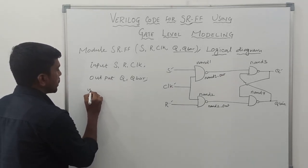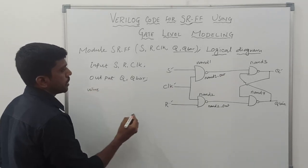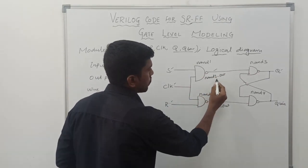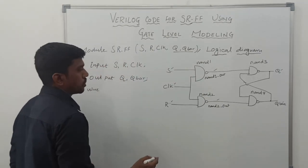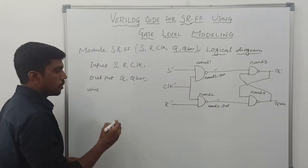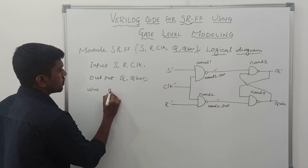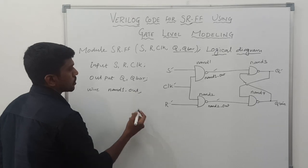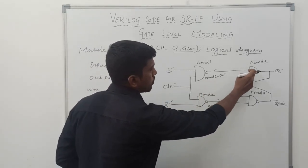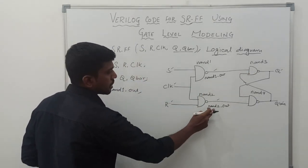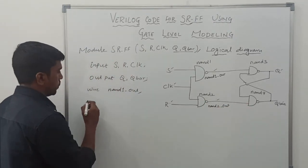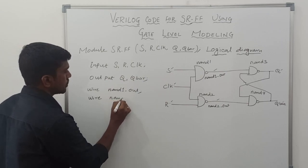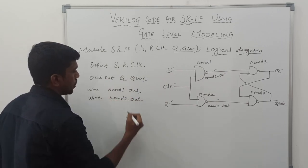After assigning inputs and outputs, we assign the wire signals. In this logical diagram we use two wire signals: NAND1-out and NAND2-out. NAND1-out is connected to the input of NAND3, and NAND2-out is connected to the input of NAND4.